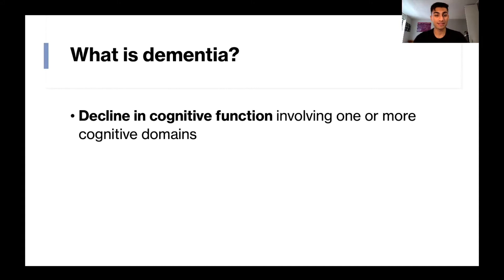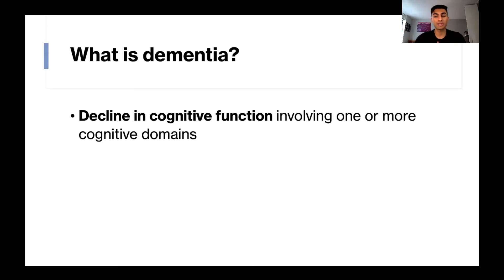So what is dementia? We define dementia as a decline in cognitive function involving one or more cognitive domains. What we mean by cognitive domains are things like learning and memory, language, executive functioning, complex attention, perceptual motor, and social cognition. So we need a decline in one or more of those categories.